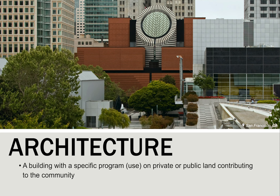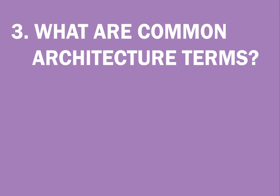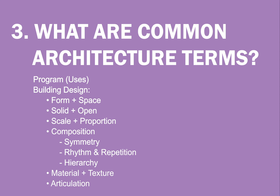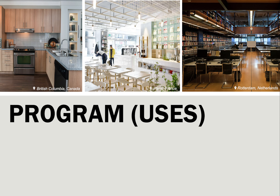Architecture can be defined in many ways. For the purposes of this presentation, the word architecture refers to a building with a specific program or use on private or public property that contributes to the built environment of the community. In the following slides, we will define and illustrate common architecture terms, including program or uses of buildings, and words that describe the different components of building design. Design takes into account the form or shape of buildings, their size in relation to other things, the elements that make up the skin or facades of buildings on the outside, and the materials they are made of.